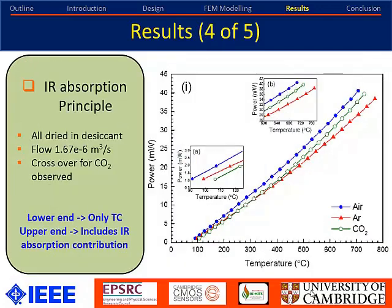For infrared absorption mode: the sensor emits infrared radiation from 0.8 to roughly 12 microns — it's a wide-band infrared emitter. We have three curves here for dry synthetic air, argon, and CO2, all passed through a desiccant. At low temperatures, air sits at the top, argon in the middle, and CO2 at the bottom because CO2 has lower thermal conductivity. However, as temperature increases toward around 700°C, the curves flip — CO2 now sits between argon and air — because CO2 absorbs infrared radiation at approximately 4.26 micron wavelength.